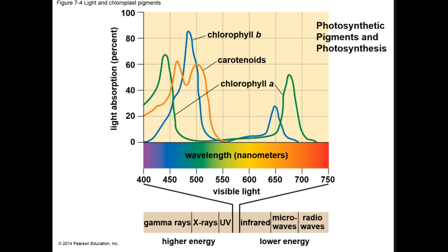Chlorophyll A is a key light-capturing pigment molecule in chloroplasts, absorbing violet, blue, and red light. Green light, however, is reflected, which is why leaves appear green. Chloroplasts also contain accessory pigments which absorb additional wavelengths of light energy and transfer them to chlorophyll A. Chlorophyll B absorbs blue and red-orange wavelengths not absorbed by chlorophyll A. Carotenoids are accessory pigments that absorb blue and green light and appear yellow or orange because they reflect those colors. In autumn, the more abundant green chlorophyll breaks down before the carotenoids, revealing their yellow color, which in summer is masked by the green.